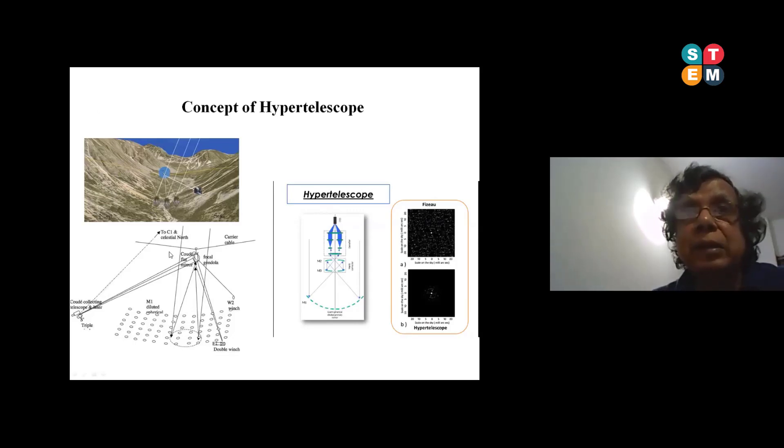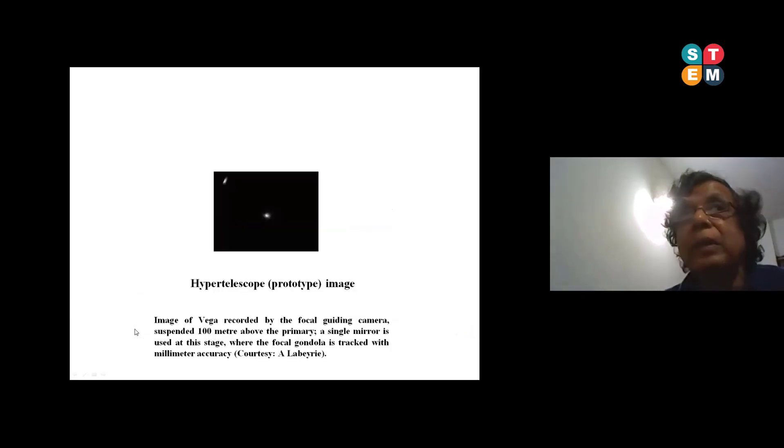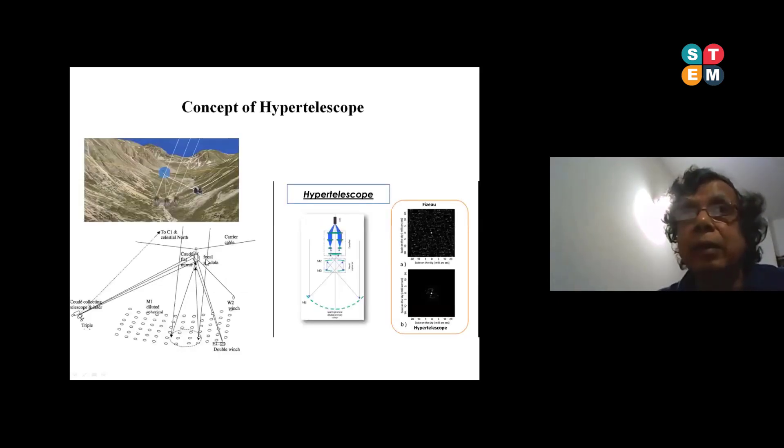The latest thing came: whether we should be happy with the two telescopes or three telescopes, or we should have like this kind of reach where we can put plenty of small telescopes and then put a gondola here, get the beam here and then get the fringes. This is of course called hyper telescope and this is the image was taken with the single mirror.